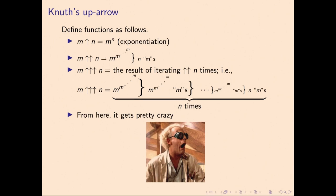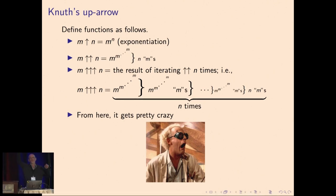And then we can iterate that. We can have stacks of m's that are stacks of m's high, that are stacks of m's high, et cetera. And then we can iterate that, and that's where it gets very crazy. The fourth iteration, or four arrows, is what Graham used to define his number. But I'm going to say we can go far beyond this.